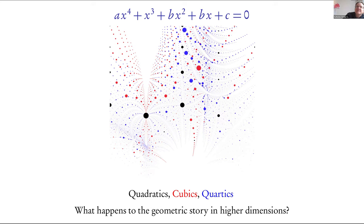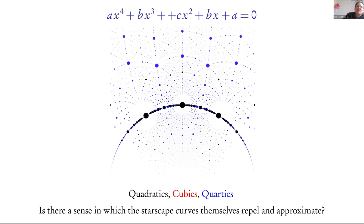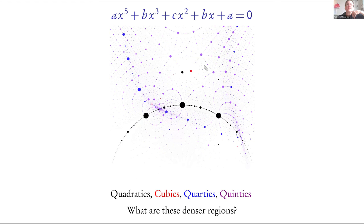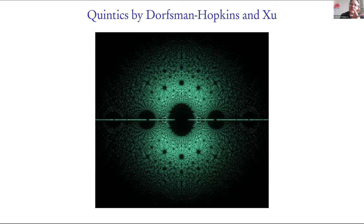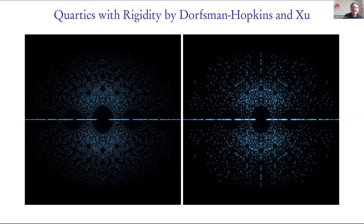There are all sorts of questions you might ask looking at these starscapes, all kinds of interesting phenomena. I just wanted to say thank you to Gabe, whose student took this project further, asking about the Galois properties of these roots and doing plots separating out points according to their behavior in terms of the Galois group of the polynomial. Gabe actually has one of these pictures up on his wall right now. They've drawn these beautiful pictures — I like the aesthetic choice of making it black so they're really more like starscapes glowing in the night sky.